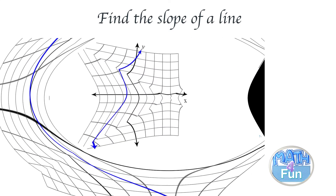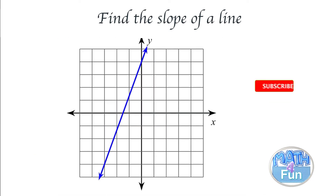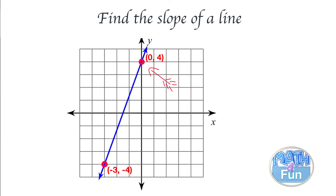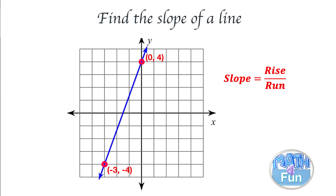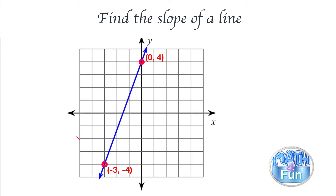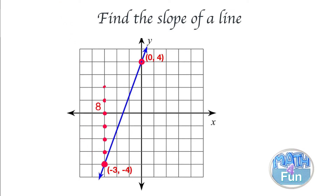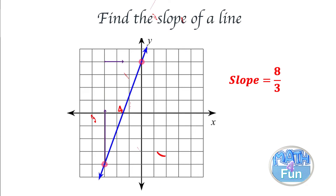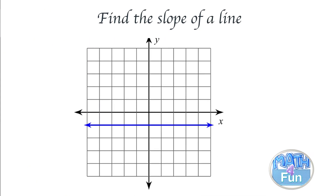Now for the second case: here we have a line increasing from left to right. Let's pick two points — negative three, negative four and zero, four. To find the slope using rise over run, we go from the lower point to the upper point: one, two, three, four, five, six, seven, eight upward, and one, two, three to the right. That's positive eight over positive three, which is eight over three.